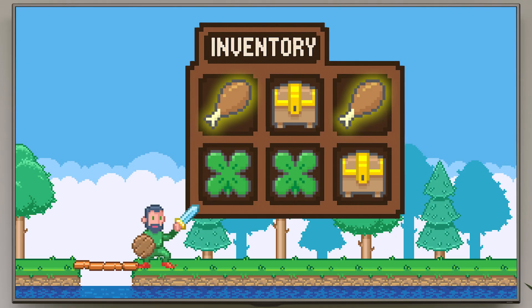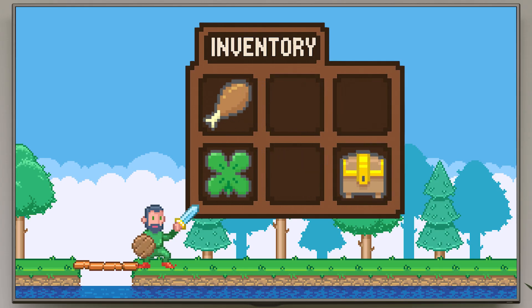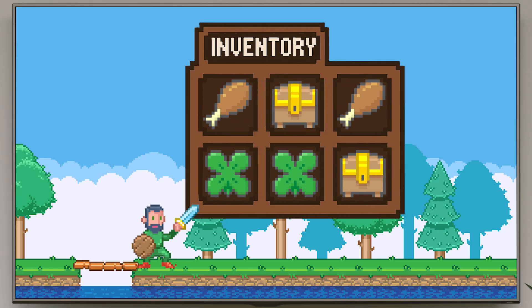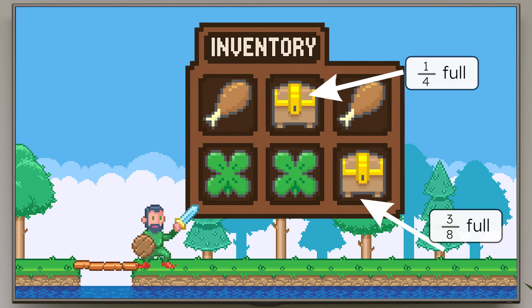I've got some energy boosters, a few items that increase my luck, and some treasure chests. I should really combine them to help free up some space so I can keep collecting. This treasure chest is one-fourth full, and this other one is three-eighths full.